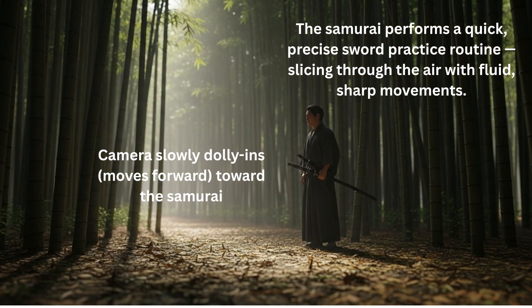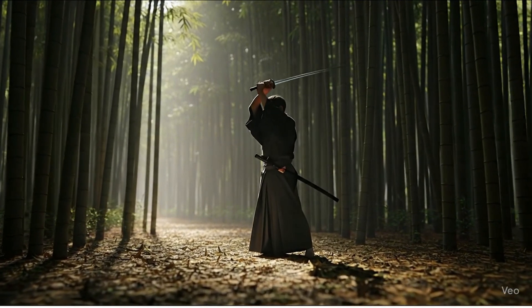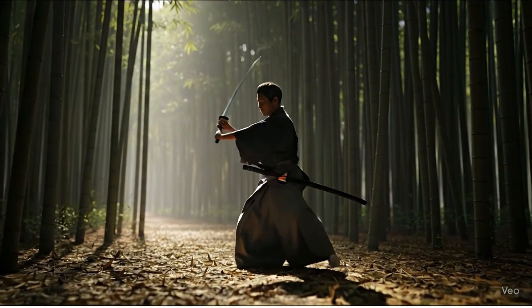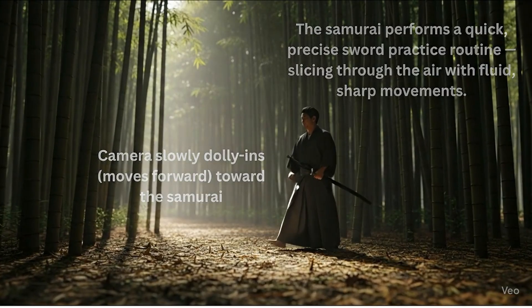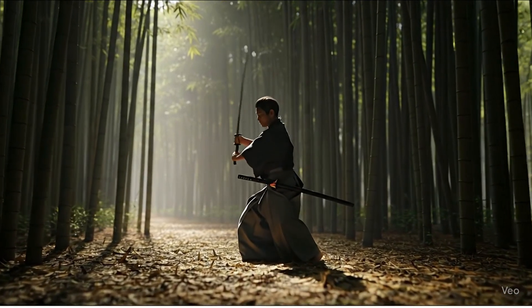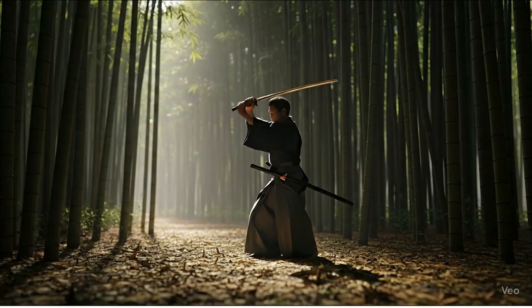We start with a slow dolly-in toward the samurai standing in the bamboo forest. Next, he performs a precise sword practice routine, slicing through the air with sharp, fluid movements. VEO3 handled the camera dolly-in quite well — it feels smooth and cinematic. The sword practice looks good, but the movements are slightly slower than described. Still, the animation blends nicely with the environment.